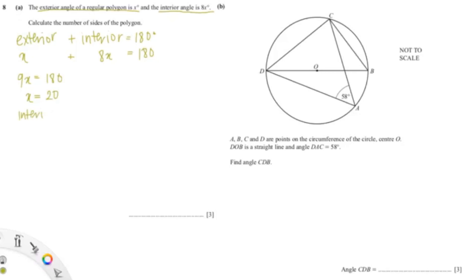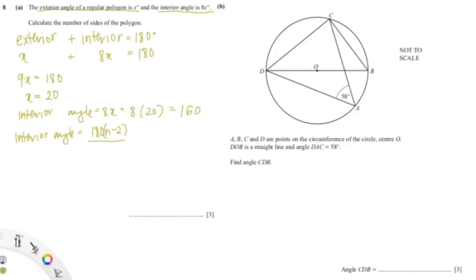Since we already found x, we can find the interior angle, which was 8x. Substituting x in gives 8 times 20, giving us 160. The formula for the interior angle of a regular polygon is 180 times (n minus 2) over n.